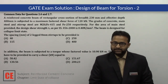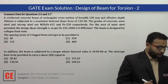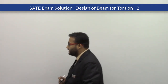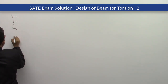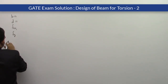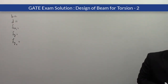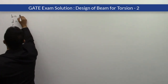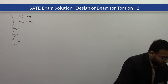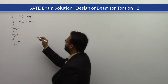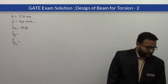The beam is designed for collapse limit state. The first problem asks for the spacing of two-legged 8 mm stirrups to be provided. Let me write the given data: width b = 230 mm, effective depth d = 400 mm, fck = 20 N/mm² (M20), main reinforcement grade Fe415, stirrup steel grade Fe250, and τc = 0.48 N/mm².